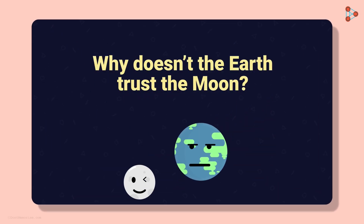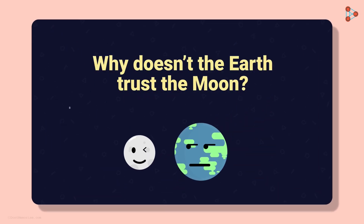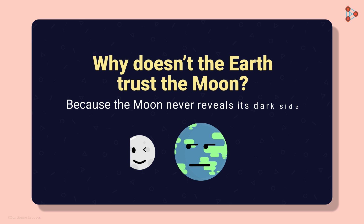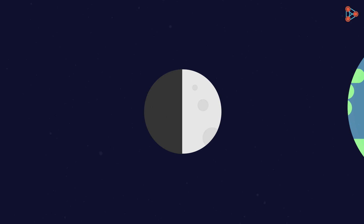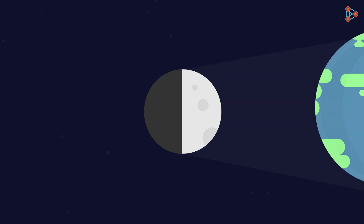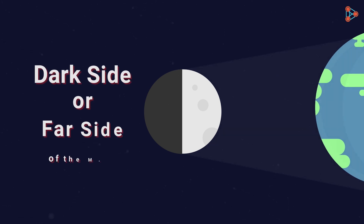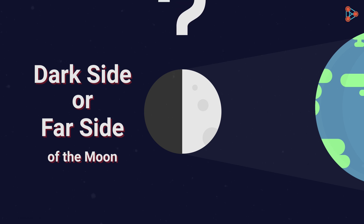Why doesn't the earth trust the moon? Because the moon never reveals its dark side. The moon has a side which no one can ever see from the earth, which is called the dark side or the far side. Let's find out why.